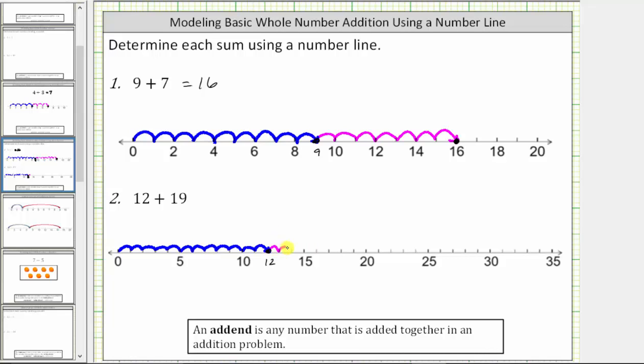So plus one, two, three, four, five, six, seven, eight, nine, 10, 11, 12, 13, 14, 15, 16, 17, 18, 19.